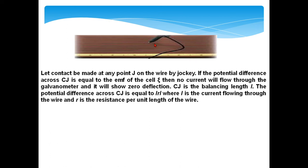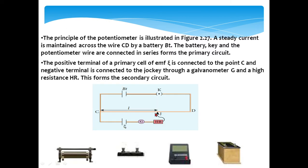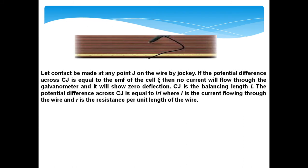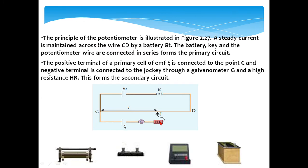The jockey contact at any point J on the wire CD produces zero deflection by the galvanometer, if the potential difference across CJ is equal to the EMF of the cell.